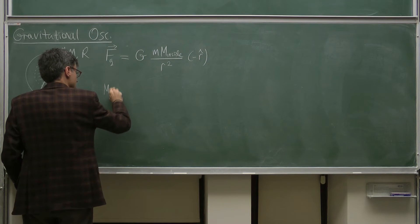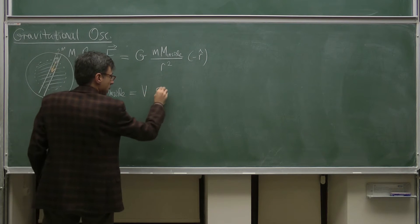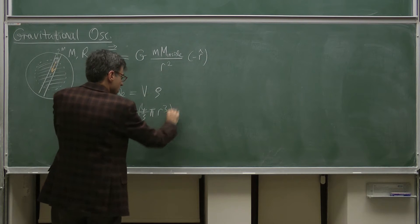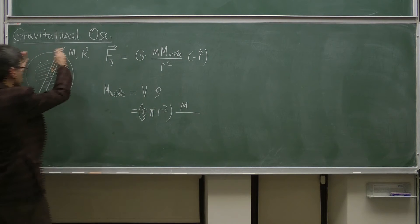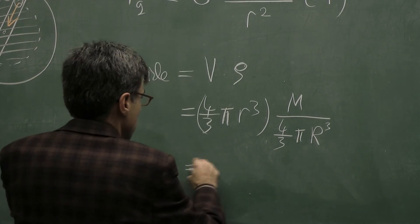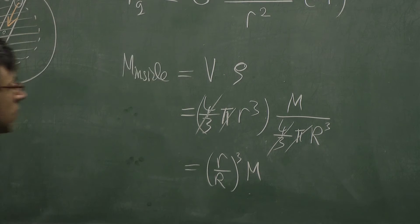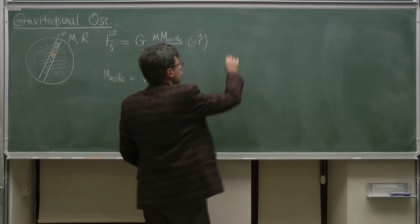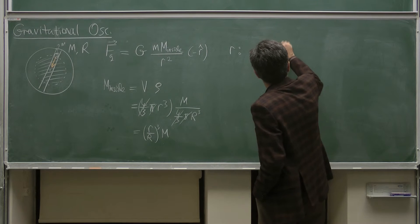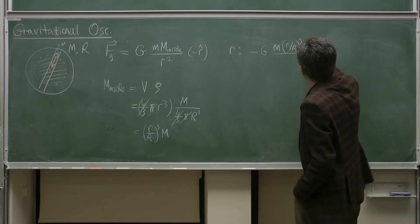M_inside is the volume of the sphere multiplied by rho, which is (4/3)π r³. And rho is mass divided by the total volume of the planet, which is M divided by (4/3)π R³. So these cancel, giving r³ divided by R³ times M. If you plug that into the equation, M_inside is r divided by R³ times M, divided by r squared.